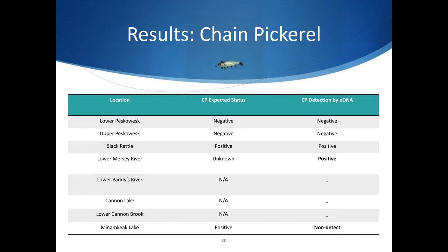Upon analyses, we detected chain pickerel at the unknown site, confirming suspicions that the chain pickerel had entered the Lower Mercy River system. eDNA did not detect chain pickerel at one positive site, Menamkiak Lake. We attribute this false negative to high acidity and PCR inhibitors present in the water, as well as insufficient sampling resolution for this large body of water. As a pilot study, we did anticipate some false negatives, and future sampling at this site will see increased sampling resolution and extensive PCR inhibitor treatment.